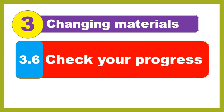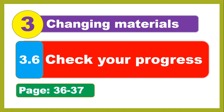This is the 'Check Your Progress' lesson. In this unit you have to review the things we learned in unit 3. We learned how materials change in different ways — materials can change by hand, by tools, by heating, and by cooling.